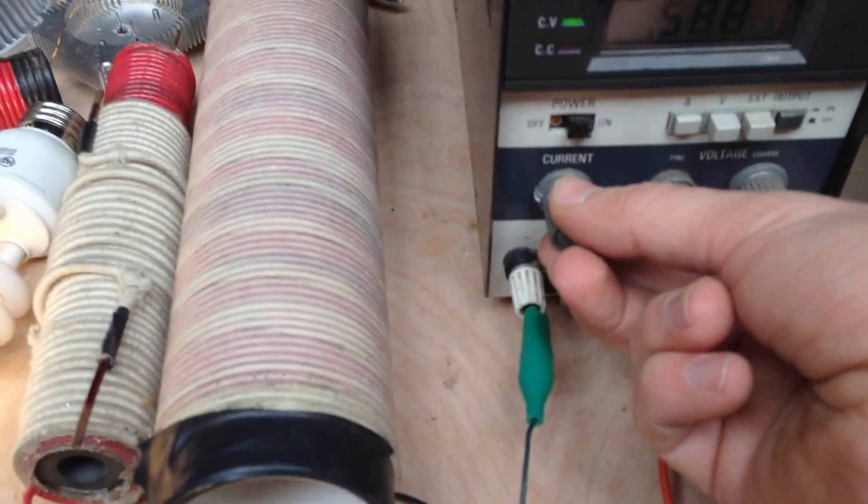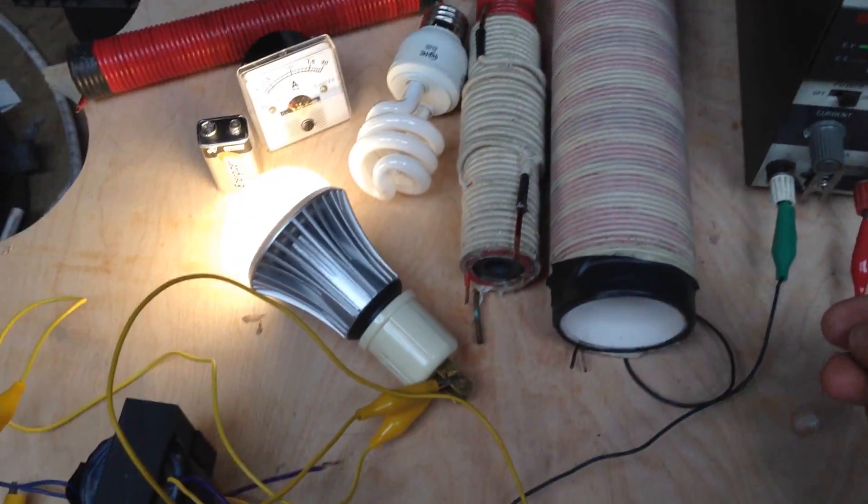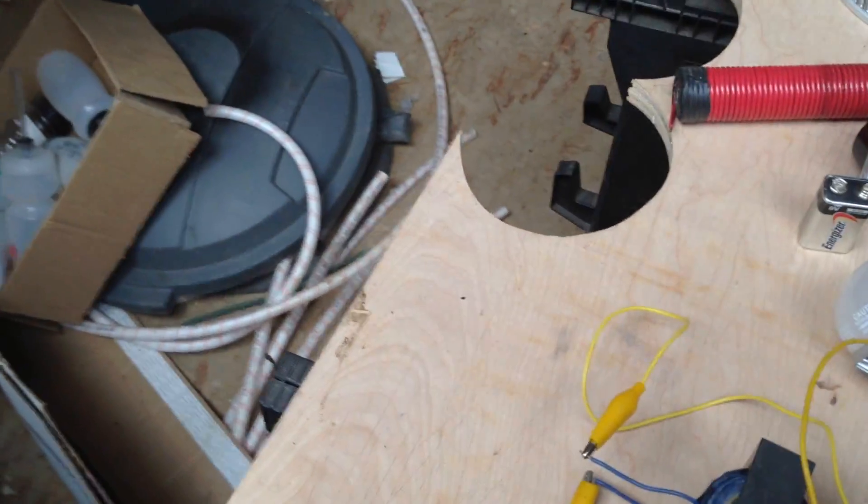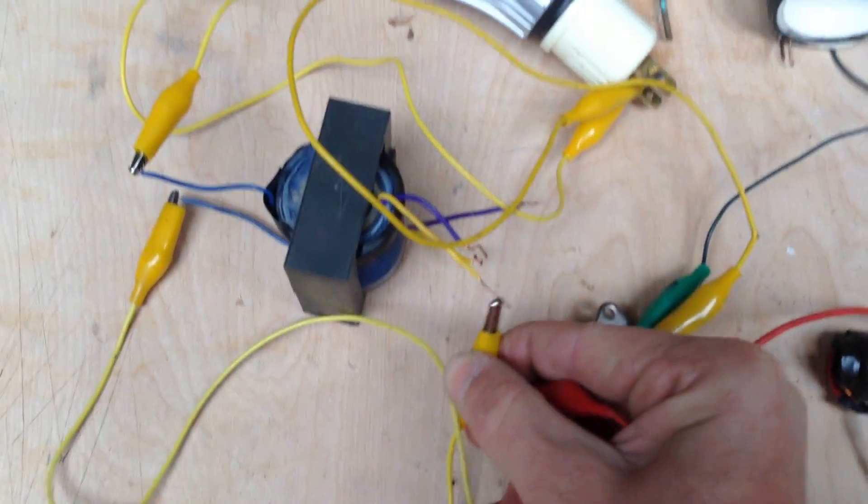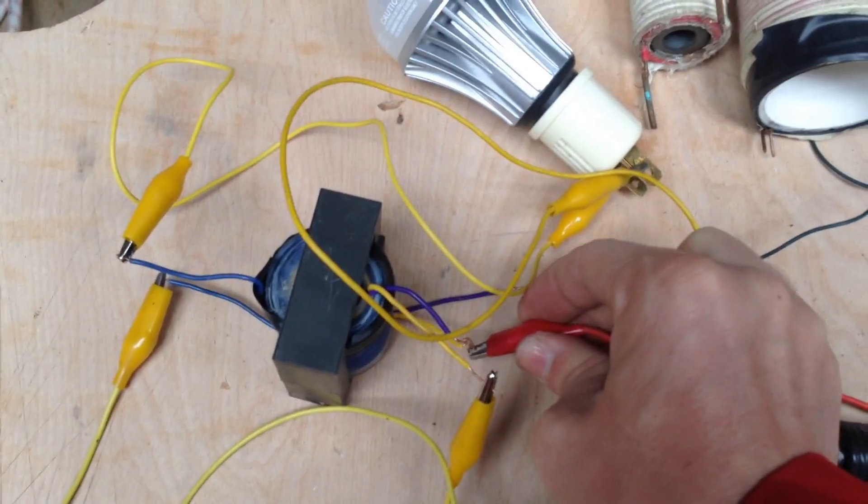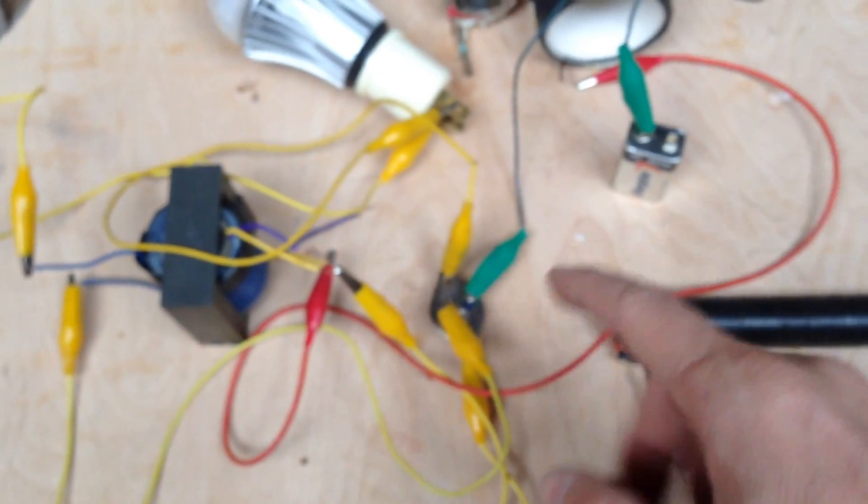So we're pulling half an amp and it's just screaming away. Say you don't have a power supply and you have to troubleshoot the same scenario. I'm going to put these back up like they were. I'm going to do this again and this time I'm going to connect to a 9-volt battery because maybe you don't have a power supply but you don't want to blow out your transistor.